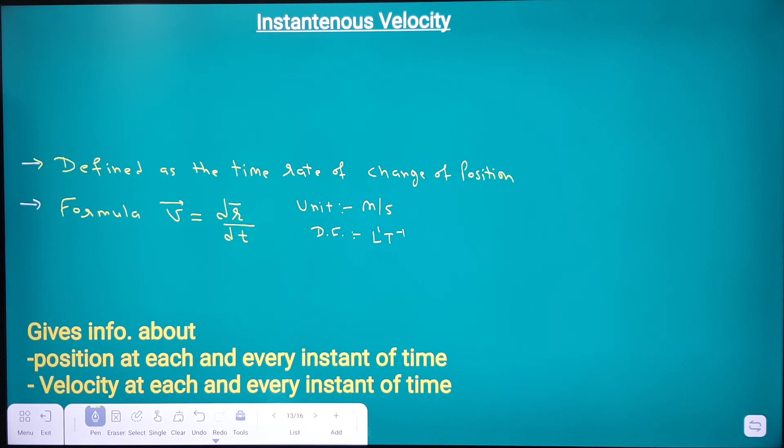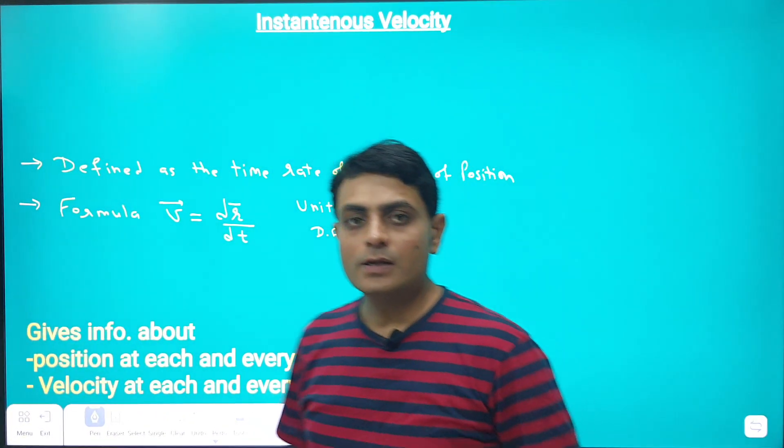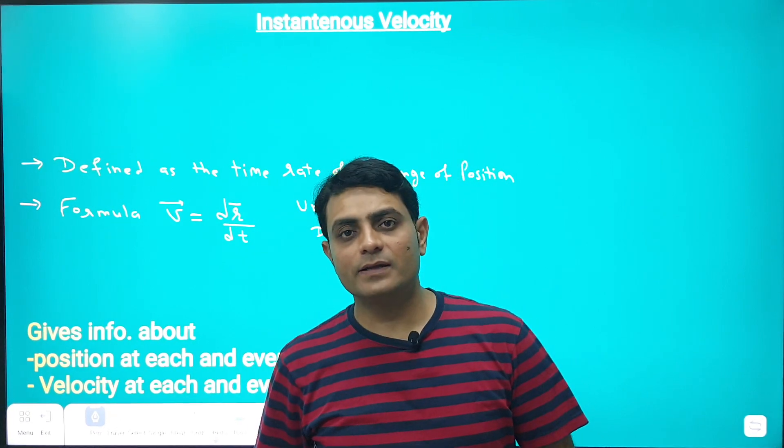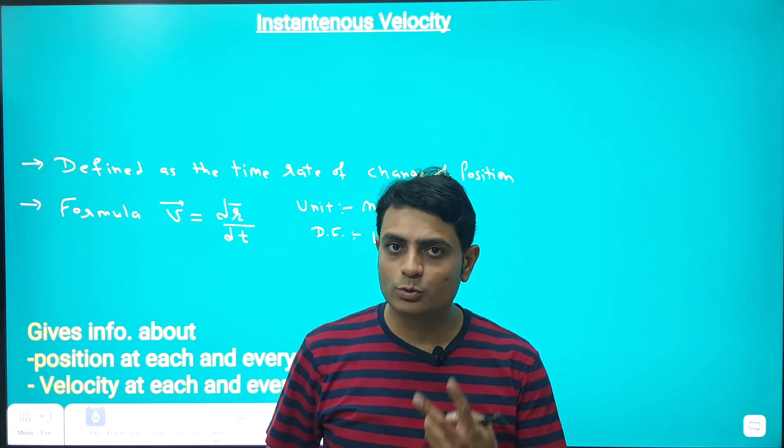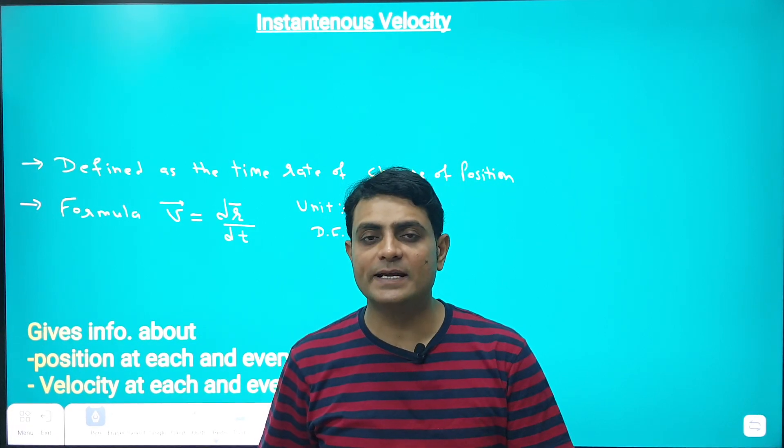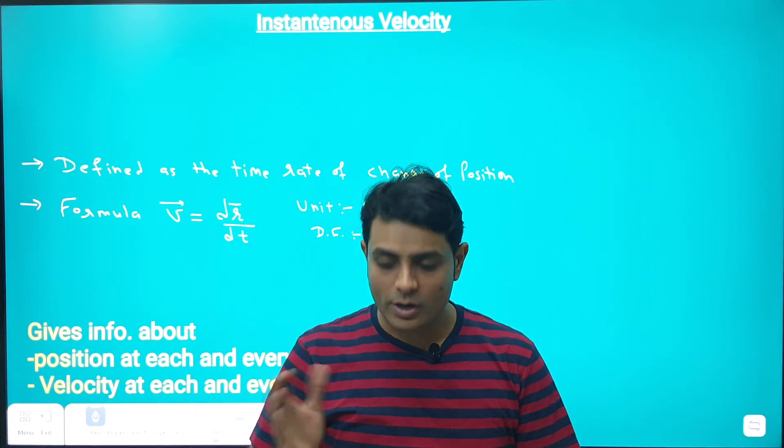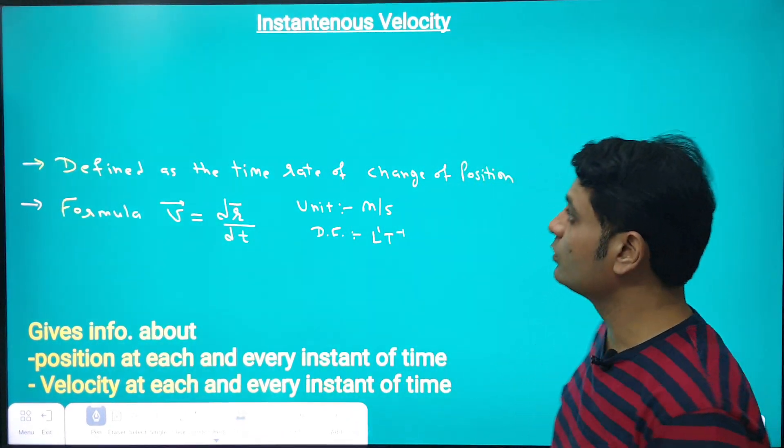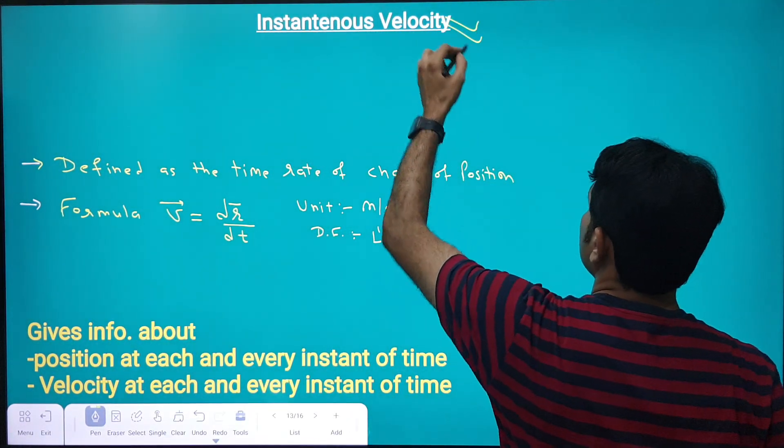So students, let's see instantaneous velocity. We studied in average speed that it is not giving information about two things: one is position at each and every instant of time, second one is speed at each and every instant of time. So in order to find out these two, we are defining a physical quantity called instantaneous velocity.